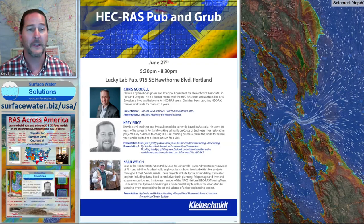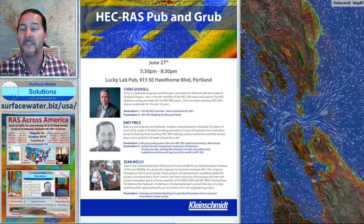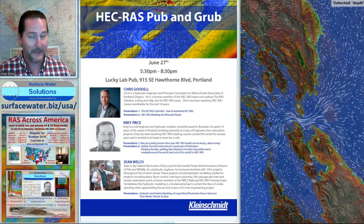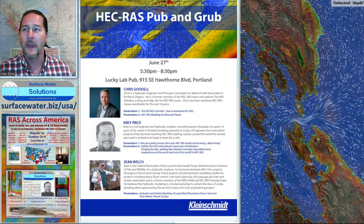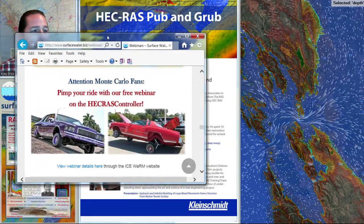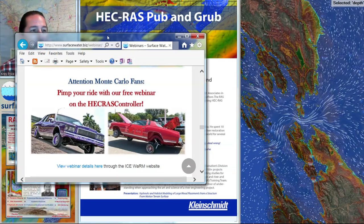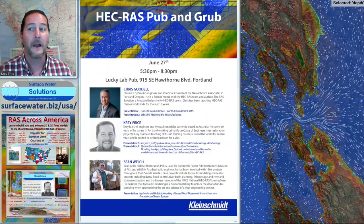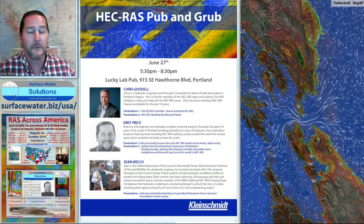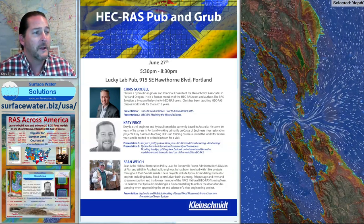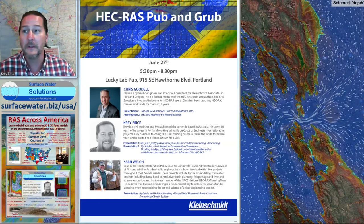He's going to walk you through a couple of presentations. These are not just standard derivations of the Saint-Venant equation or what you might have had in other courses — this is a bit of fun and a little more casual. Chris is going to show you how to pimp your ride with the HEC-RAS controller, how to get your HEC-RAS to do whatever you want it to do — customize it, get your Monte Carlo analyses. He'll also walk you through a pretty cool presentation on modeling the Missoula floods, which is what actually carved out the Columbia River Gorge.